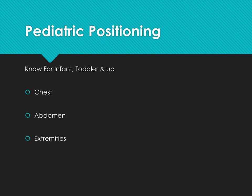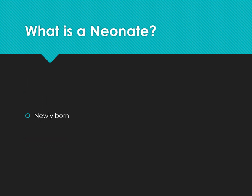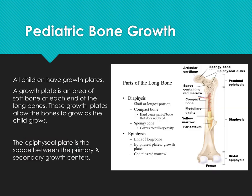Pediatric positioning for the infant, toddler, and up: know the chest, abdomen, and extremities. A neonate is a newly born. Pediatric bone growth: all children have growth plates, which are areas of soft bone at each end of the long bones. These growth plates allow the bones to grow as the child grows. The epiphyseal plate is the space between the primary and secondary growth centers. See the chart here.